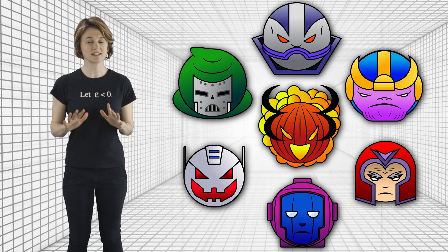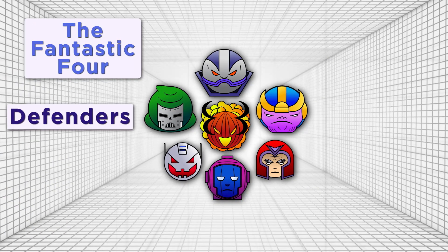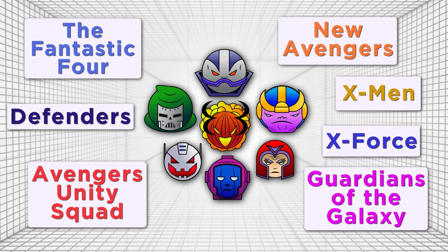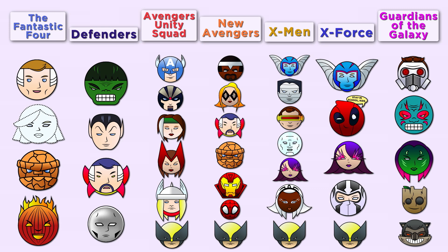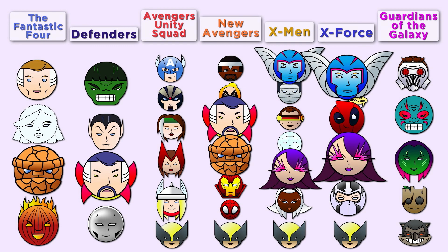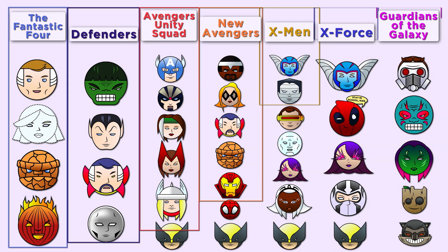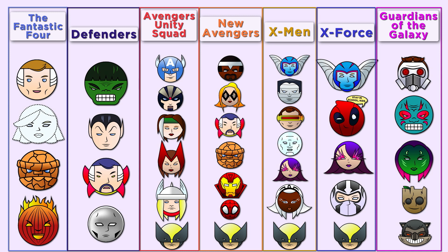We have seven teams of superheroes: the Fantastic Four, the Defenders, the Avengers Unity Squad, the New Avengers, the X-Men, X-Force, and Guardians of the Galaxy. These teams need to stop these supervillains today to save the world. The problem is that these teams are only effective when their entire roster is available, but many of their members are serving double — or in Wolverine's case, quadruple — duty. So we need to figure out the most efficient way to schedule when these teams can attack, minimizing wait time so all the supervillains can be stopped as quickly as possible.